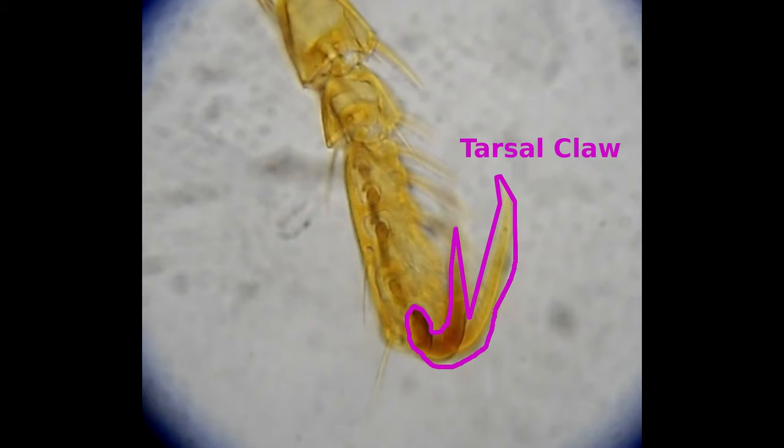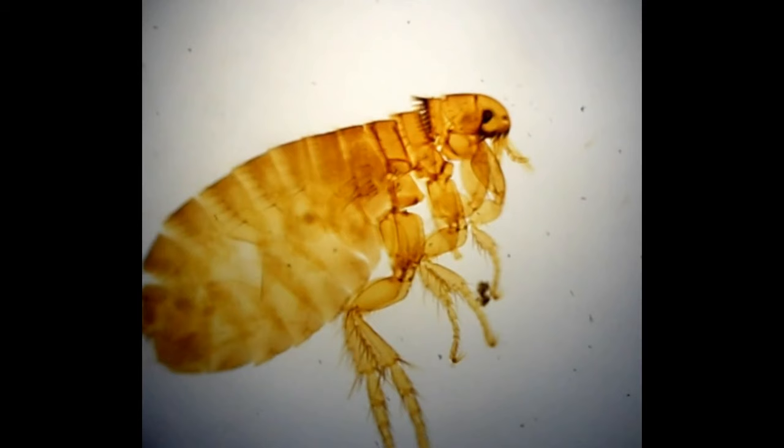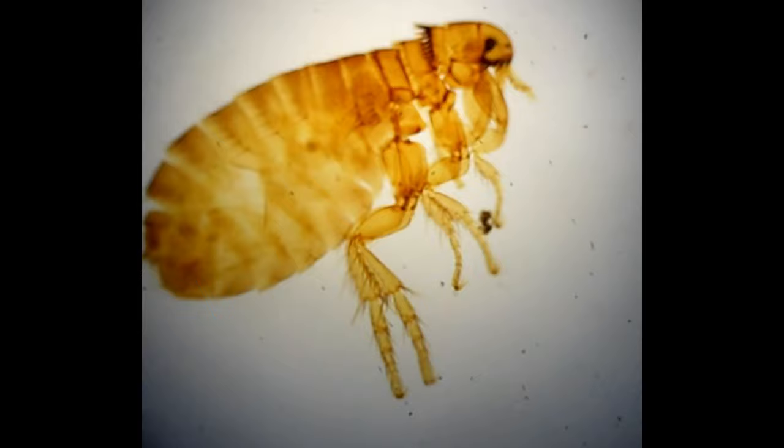Number nine, the jumping apparatus. At this low power view, you can see that the hind legs of the flea are the longest. These legs hold the secret to the flea's jumping ability, but it's not because they're particularly muscly or strong, but because of something much more subtle.